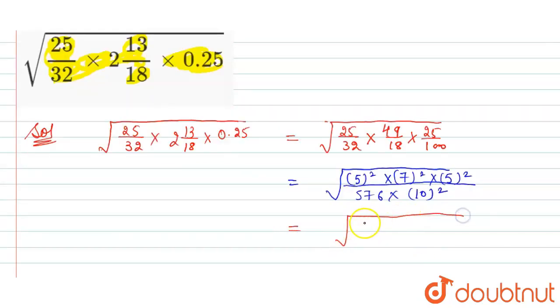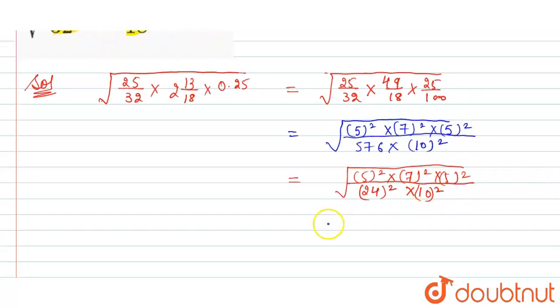Divided by 576, which is the square of 24, so here it is 24 squared into 10 squared, 5 squared. And we can write it as under root of 5 into 7 into 5 divided by 24 into 10, whole squared.